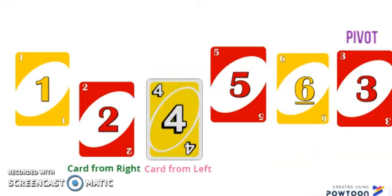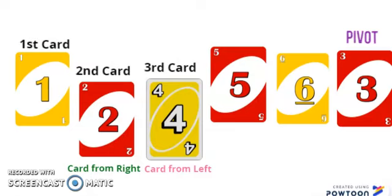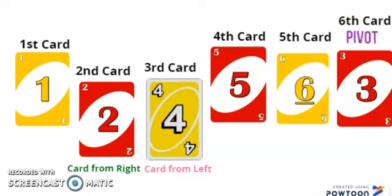When I make the comparison this time, I realize that the card from the left is the third card in the set, while the card from the right is the second card. When the card from the left comes after the card from the right, I know my sorting process is complete.